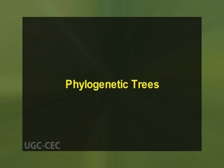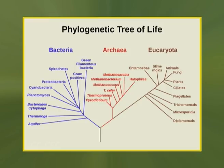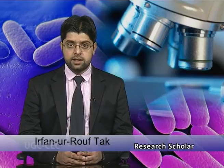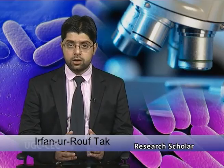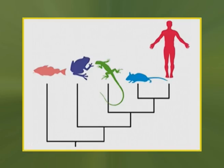A phylogenetic tree or evolutionary tree is a branching diagram showing the inferred evolutionary relationships among various biological species or other entities, based upon similarities and differences in their physical or genetic characteristics. The taxa joined together in the tree are implied to have descended from a common ancestor. Phylogenetic trees are central to the field of phylogenetics.